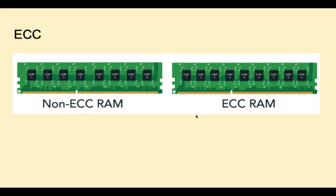Here's a picture comparing non-ECC RAM with ECC RAM. The error correcting code RAM will have an extra chip — there are 9 chips here compared to 8 chips on non-ECC RAM. That extra chip is used for error detection and correction for the other 8 chips that hold data. The advantage of ECC RAM is a much lower fail rate, but it requires a motherboard and CPU that support it, which are typically more expensive. More sophisticated ECC approaches can be used in space applications where the system is much more susceptible to cosmic ray interference, since the Earth's atmosphere is not there to provide protection.